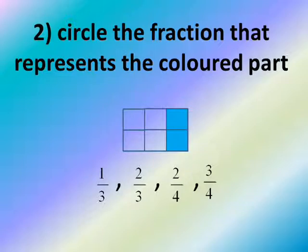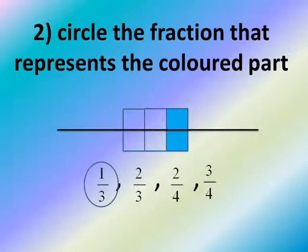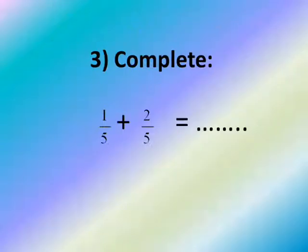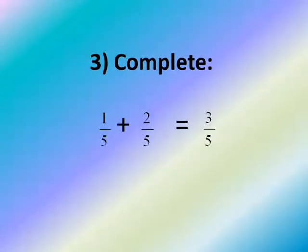We have 2 colored from 6, so we have 2 over 6. But we don't have 2 over 6 in the choices. We have 3 squares up and 3 squares down. We have 1 colored square from the 3 squares up. So the fraction is 1 over 3.